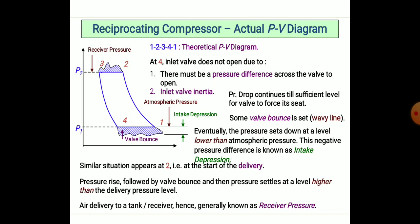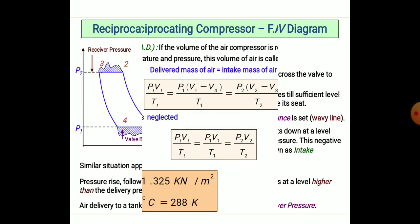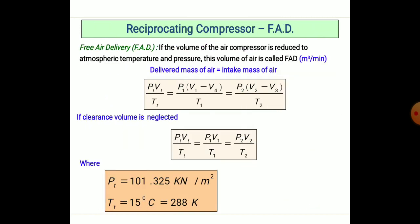There must be a pressure difference across the valve to open it, which is essential to operate the cycle smoothly. Inlet valve inertia causes a drop in pressure below atmospheric level, and this negative pressure difference is known as intake. The free air delivered (FAD) is reduced to atmospheric temperature and pressure: P1·V1/T1 = P1·V1/T1 and P2·V2/T2, where P1 is always 101.325 kN/m² and temperature is always 15°C, which is 288 K.